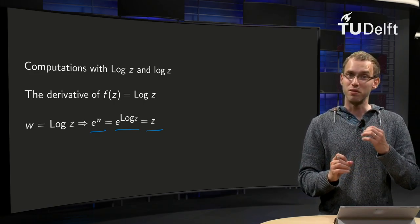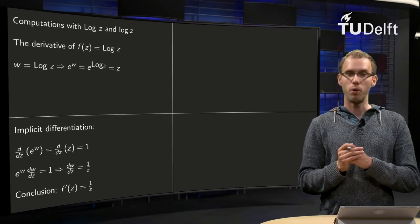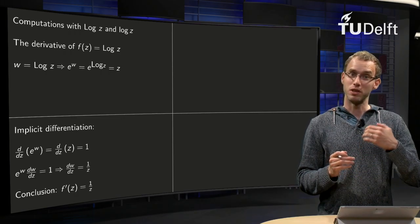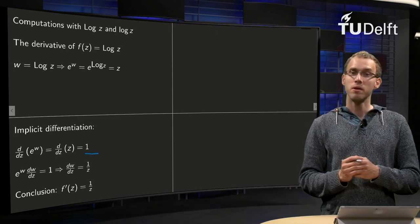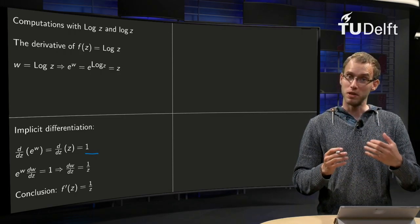We can use this to compute the derivative dw dz. So, what can we do? We take the ddz of e to the power w equals ddz of z equals 1, and we can work out the ddz of e to the power w using implicit differentiation.